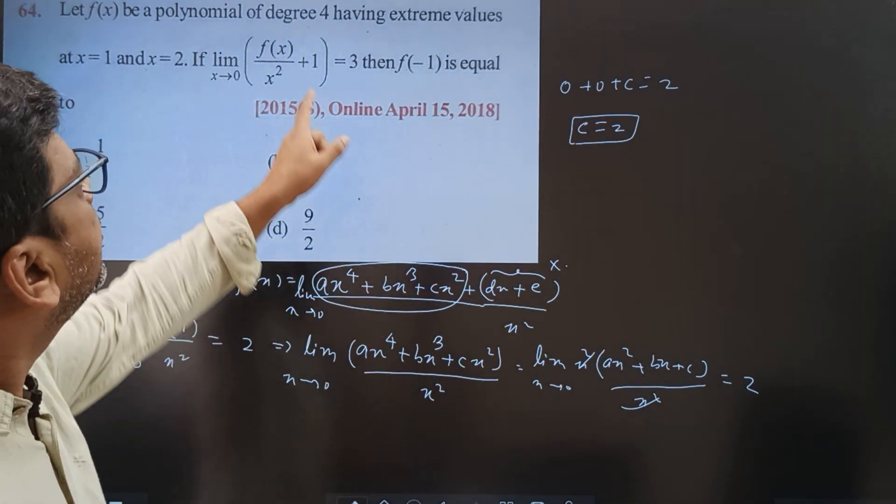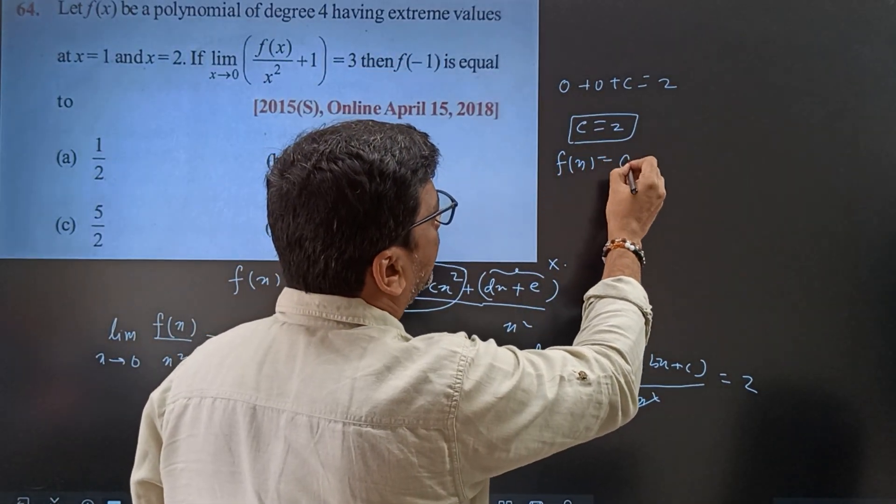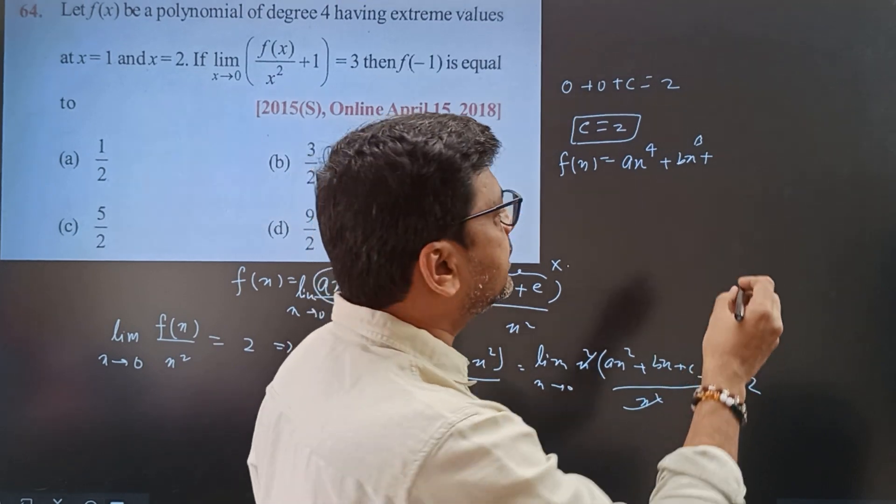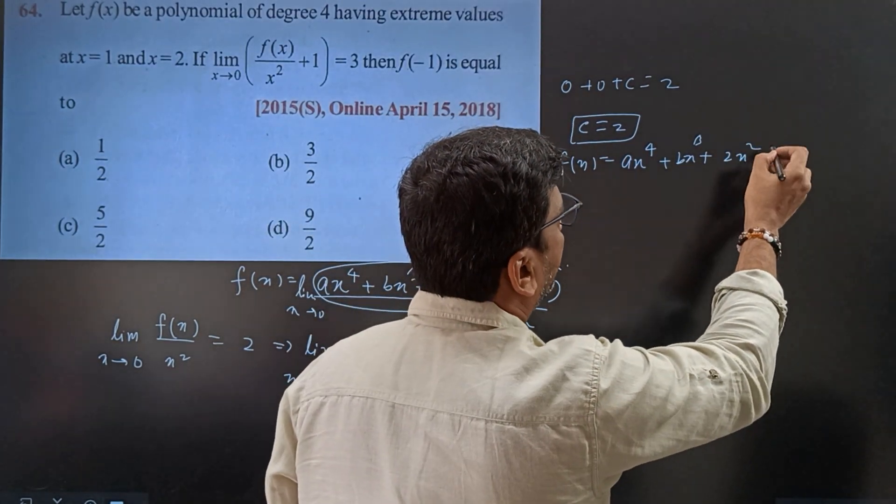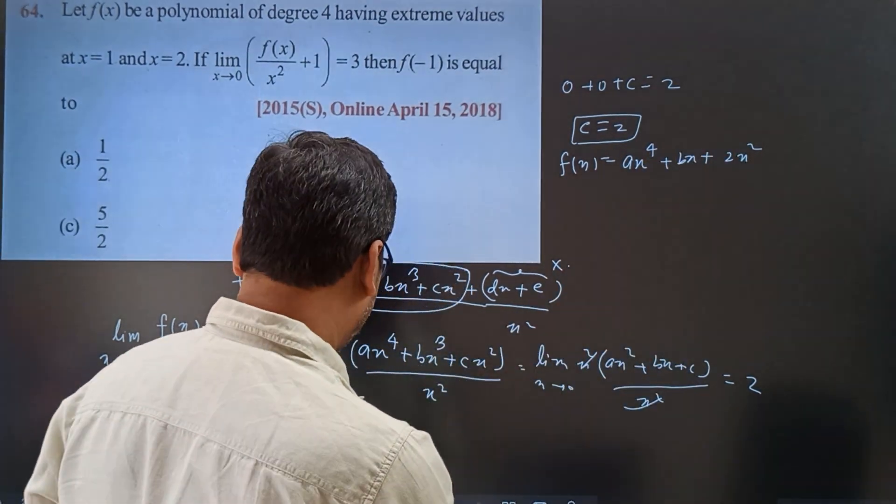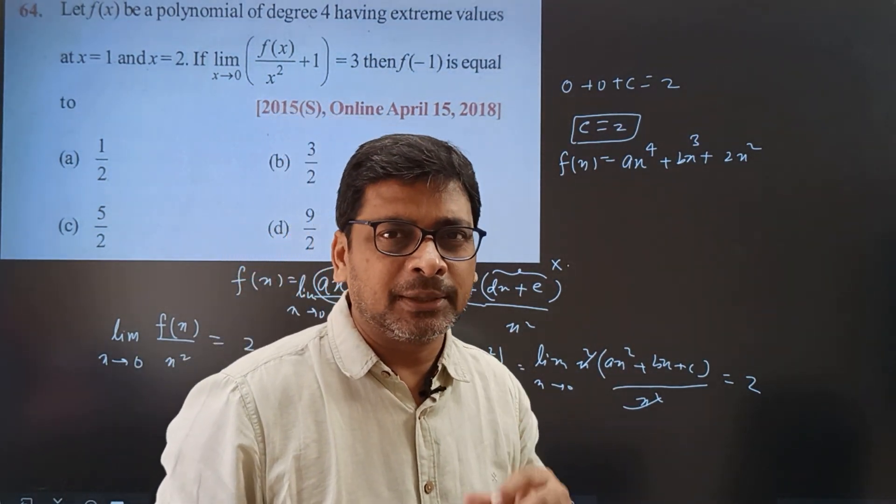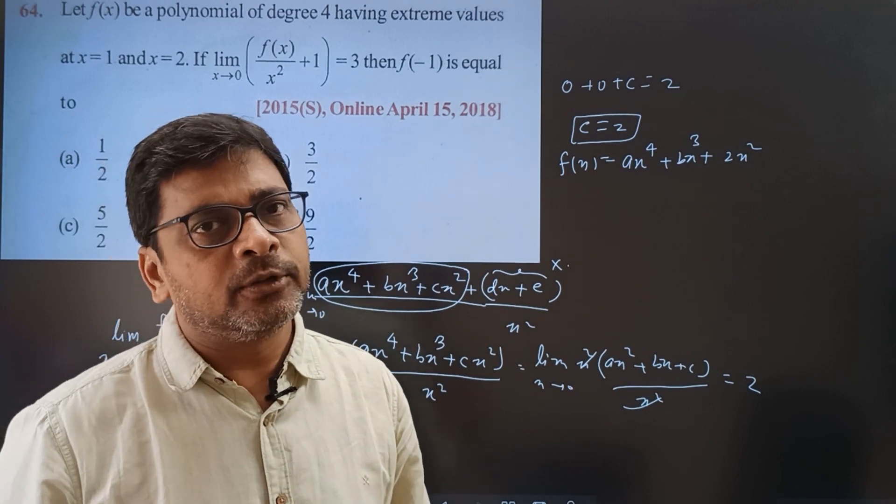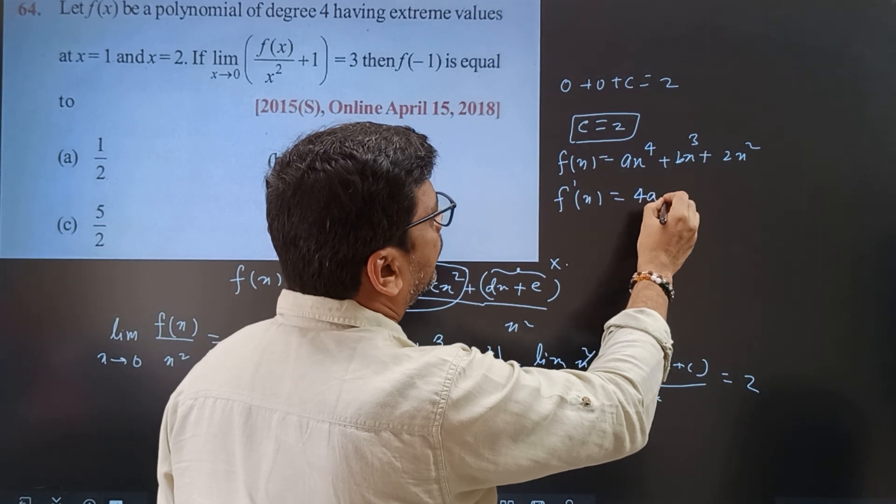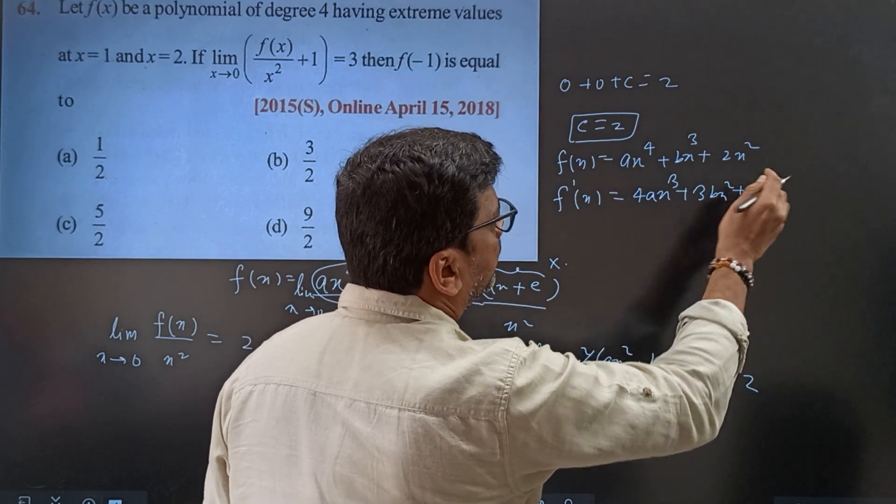Here we have told the extreme values x is equal to 1 and x is equal to 2. Now, what do you have to write? f'(x) = 4ax³ + 3bx² + 4x.